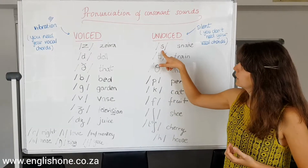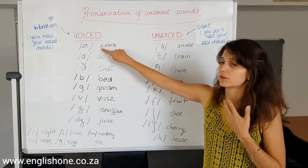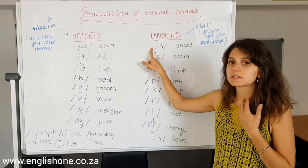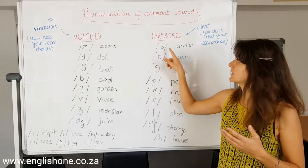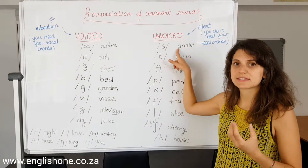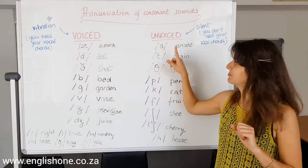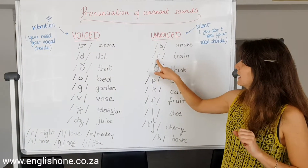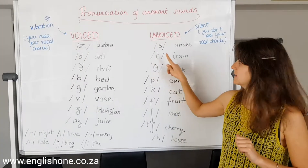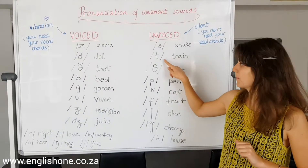So the first one — we have the Z sound voiced, and this one we have the S, as in 'snake,' 'snack.' Very different. The T, as in 'train.'